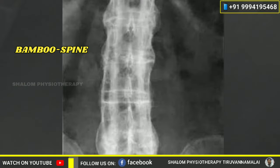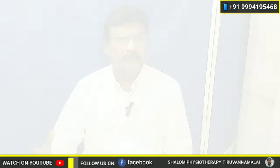This leads to what is called a Bamboo Spine — the spine takes on the appearance of bamboo. This is the characteristic sign of Ankylosing Spondylitis.